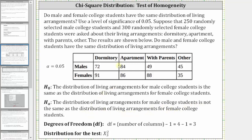Notice how the table has four columns of data, and therefore the degrees of freedom are equal to four minus one, which is three. The distribution for the test is the chi-square distribution with three degrees of freedom.